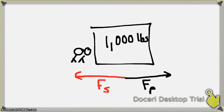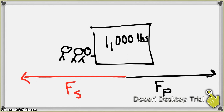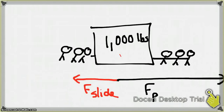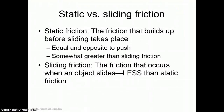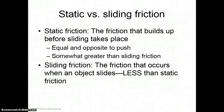That's static friction. Now let's say you finally have enough people to get that block moving. You have exceeded the force of static friction because the force of your push is greater than the force of friction, so you get the block moving. Now here's an interesting fact: you still have friction — you have sliding friction now — but sliding friction is actually a little bit less than the force of static friction. Static friction is the friction that builds up before the sliding takes place; it's equal and opposite to the push or the pull, and it's somewhat greater than sliding friction. Sliding friction is the friction that occurs when you have a sliding object, and it's less than static friction.